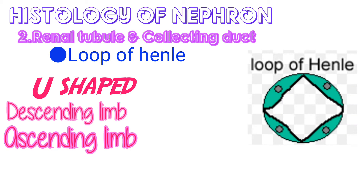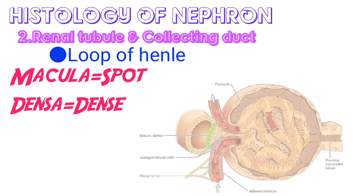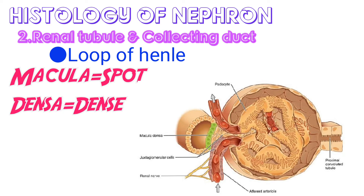The thick ascending limb consists of simple cuboidal to low columnar epithelial cells. The final part of the ascending limb makes contact with the efferent arteriole. Because the columnar epithelial cells in this region are crowded together, they are known as the macula densa. The word 'macula' means spot and 'densa' means dense, so the macula densa is the region where the final part of the ascending limb makes contact with the efferent arteriole, creating a dense region.